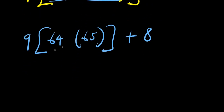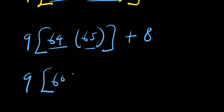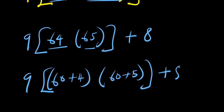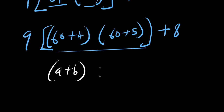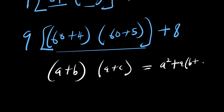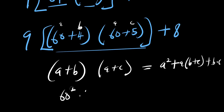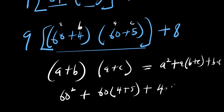Let's concentrate on 64 times 65. I can write 64 as 60 plus 4, and 65 as 60 plus 5. This is in the form (a + b)(a + c), which equals a^2 plus a times (b + c) plus b times c. So we get 60^2 plus 60 times (4 + 5) plus 4 times 5.